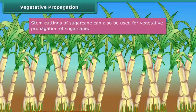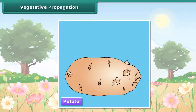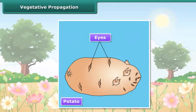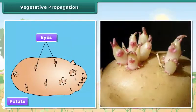Similarly, stem cuttings of sugarcane can also be used for vegetative propagation of sugarcane. Do you know potato is the edible stem of a plant? It bears small scars on it called eyes. These are the axillary buds. Each eye on a potato can give rise to new plants by forming a shoot above and root below.